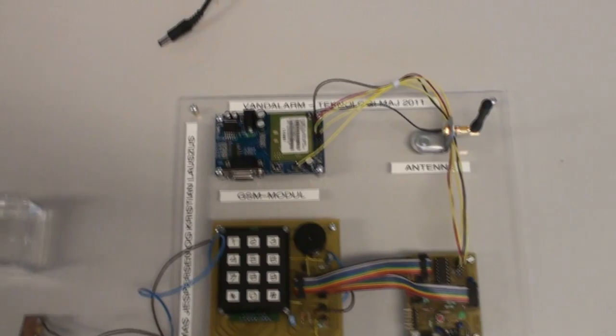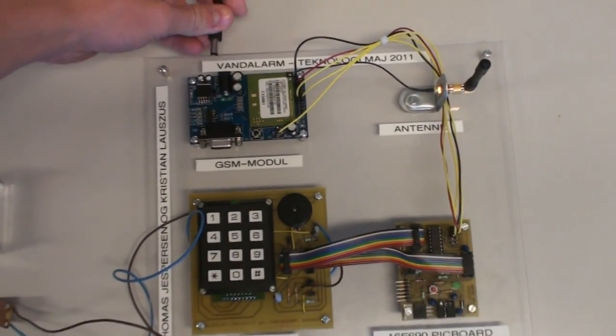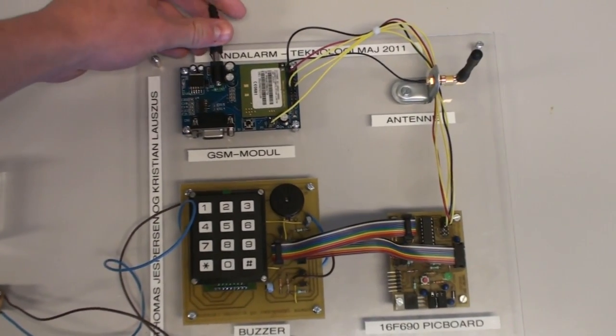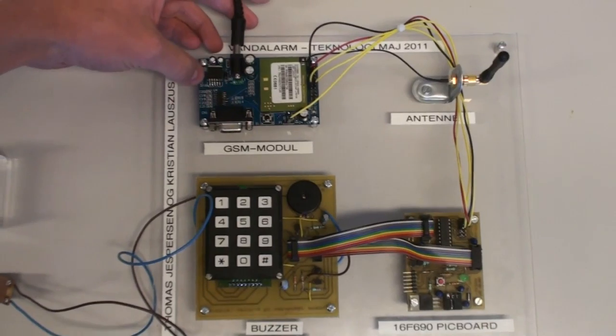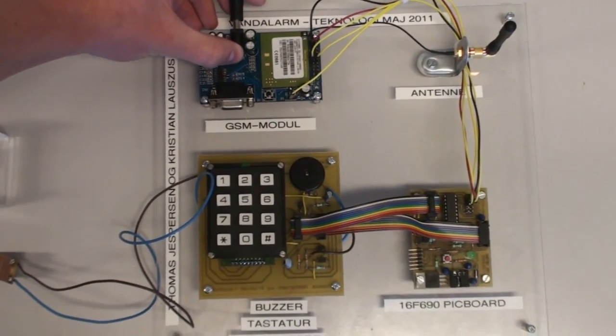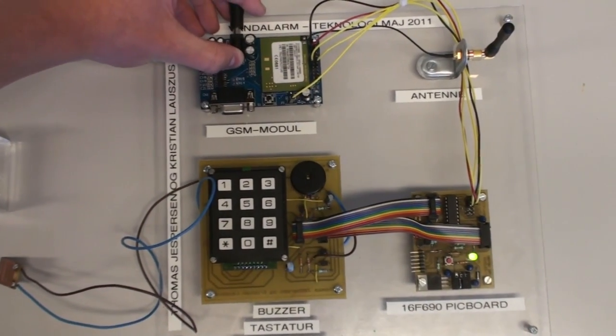To power up the product we connect the power supply to the GSM module because of the on-board voltage regulator making a 3.3V voltage level.